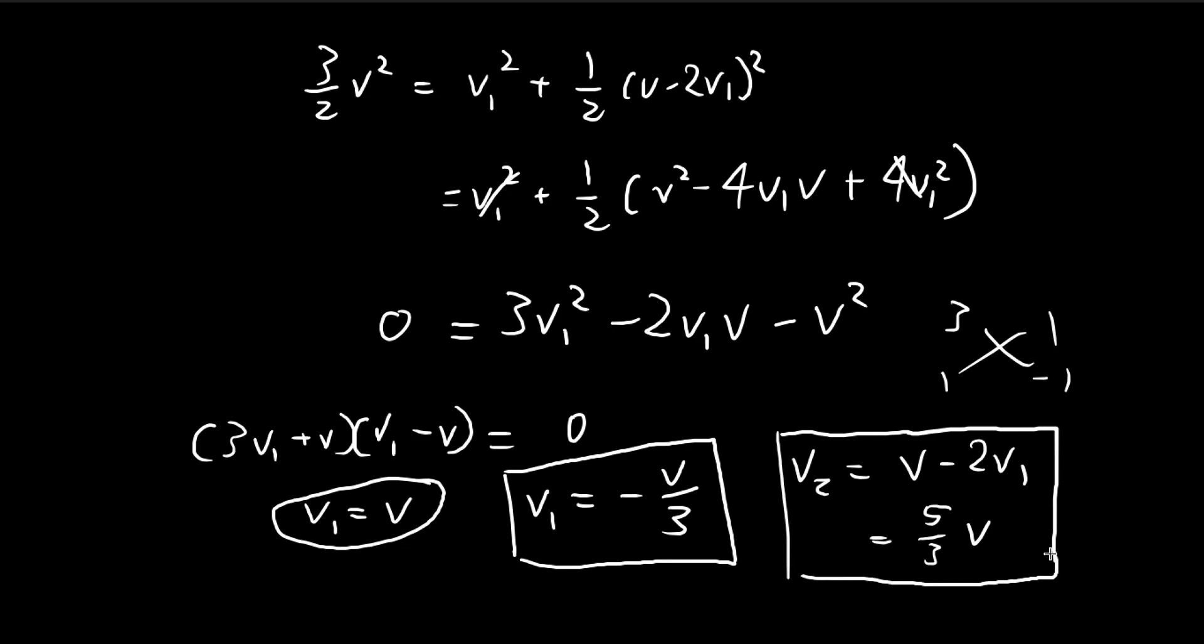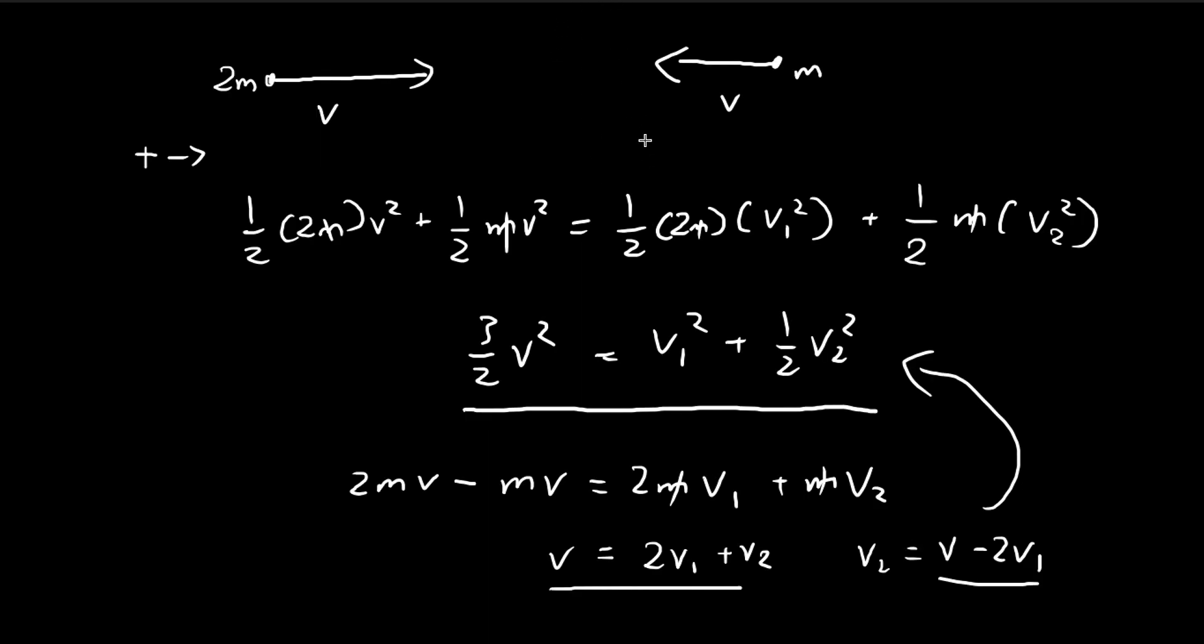So after the two masses collide, this is going to bounce rightwards even faster. This is going to bounce back leftwards at a slower speed. So this is how you solve it using the lab frame. Thank you.